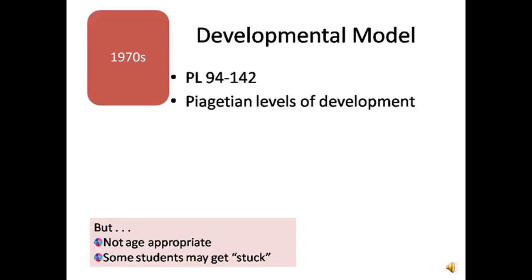In 1975, Congress passed the Education for All Handicapped Children's Act, which is now called IDEA. In order to receive federal funds, states had to develop and implement policies that assure a free, appropriate public education to all children with disabilities.